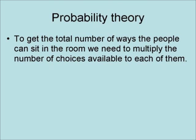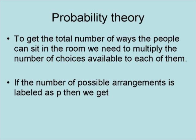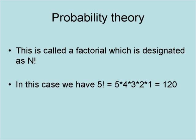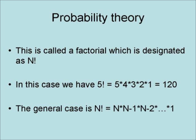To get the total number of ways that people can sit in the room, we need to multiply the number of choices available to each of them. If the number of possible arrangements is labeled as p, then p equals 5 times 4 times 3 times 2 times 1, which equals 120. This is called the factorial, designated as n factorial. In this case, we have 5 factorial equals 120. The general case is n factorial equals n times n minus 1 times n minus 2, and so on, all the way down to 1.